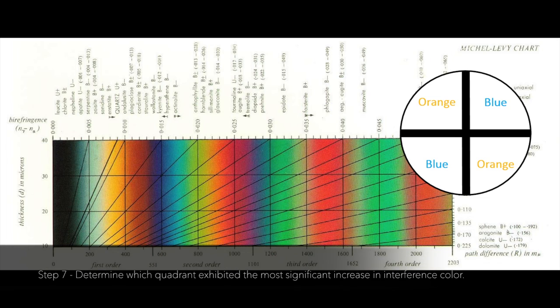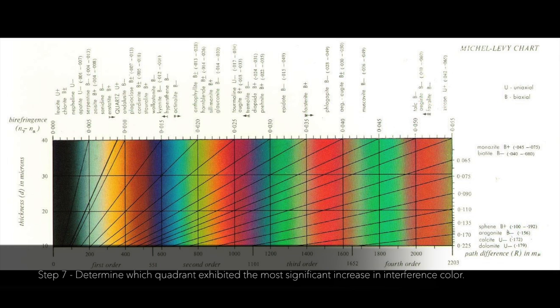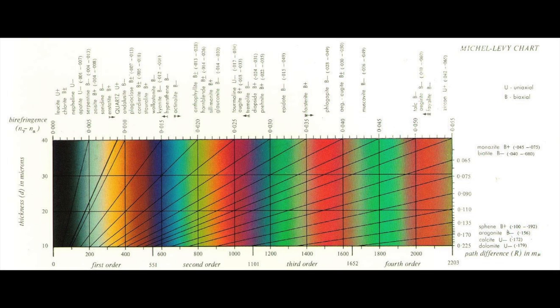Step 7: Using the Michel Levy chart, determine which quadrant exhibited the most significant increase in interference color with the addition of the accessory plate. The northwest exhibited a first order orange and the northeast exhibited a second order blue.